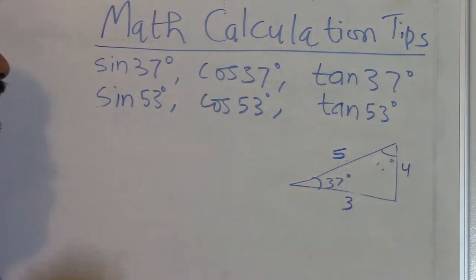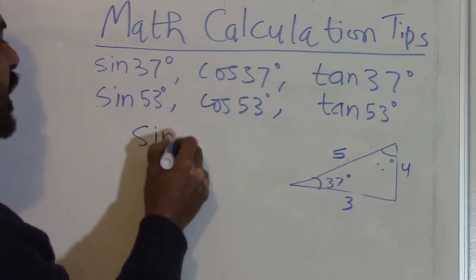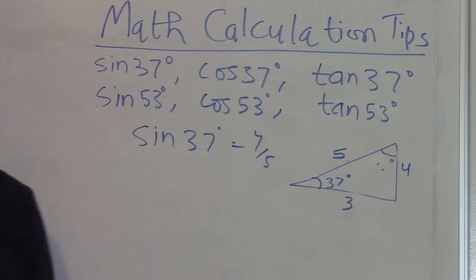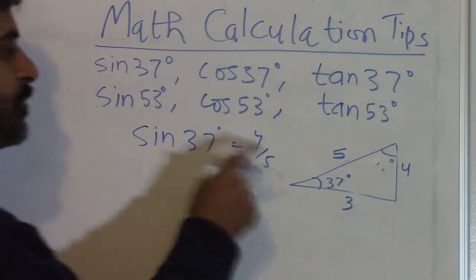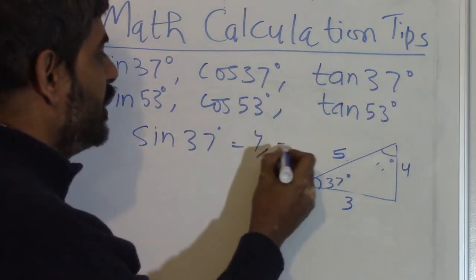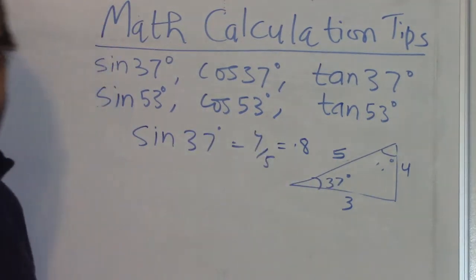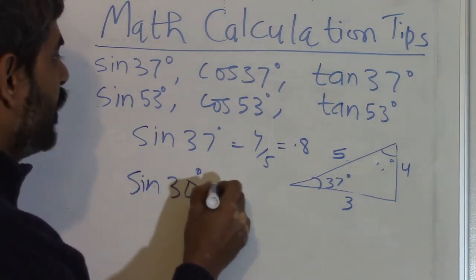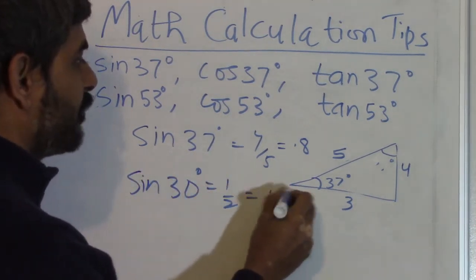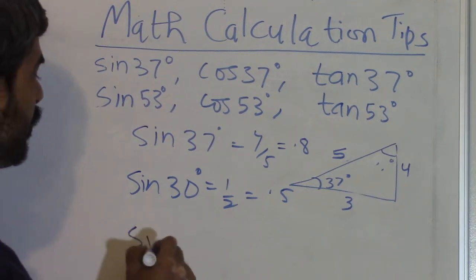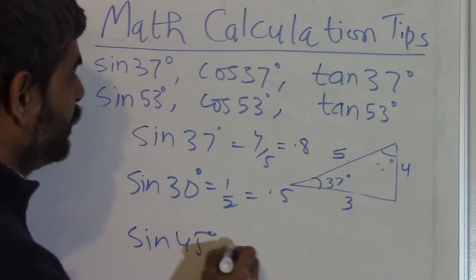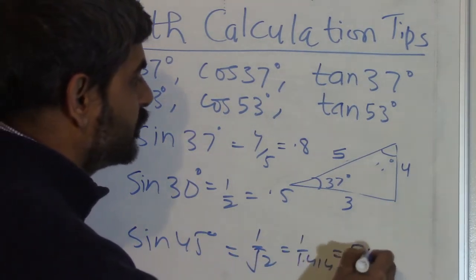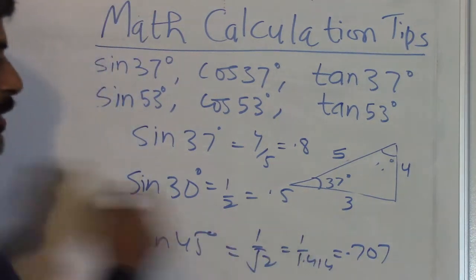And now if you do like this, then you write sin 37° is equal to 4 by 5. This will be wrong, and I have to make sure that you don't end up writing it this way. So if you write it this way, this will be 0.8. Now you remember that sin 30° is 1 by 2 or 0.5. You also remember that sin 45° is equal to 1 upon root 2, or 1 upon 1.414, or 0.707.